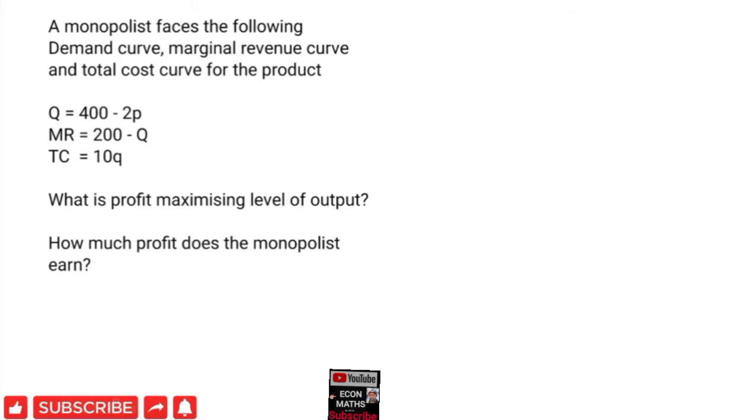The demand curve is Q = 400 - 2P, marginal revenue is MR = 200 - Q, and total cost is TC = 10Q. What is the profit maximizing level of output? How much profit does the monopolist earn?